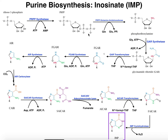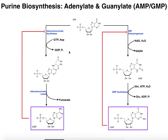In the previous video, we saw the enzymatic process by which we convert ribose 5-phosphate into IMP, which in some ways you could consider the parent purine nucleotide. Although IMP is not incorporated into DNA or mRNA, it is used to create both AMP and GMP. IMP can be diverged between two different pathways, each of which is a two-step process, and you can get AMP and GMP respectively.